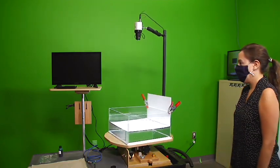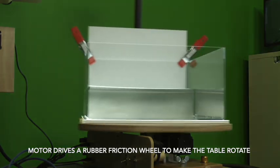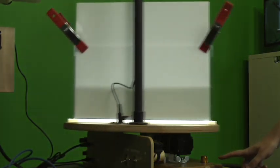Let's take a closer look at the turntable. You can see the motor beneath it. This motor drives a rubber friction wheel, which then causes the table to rotate.